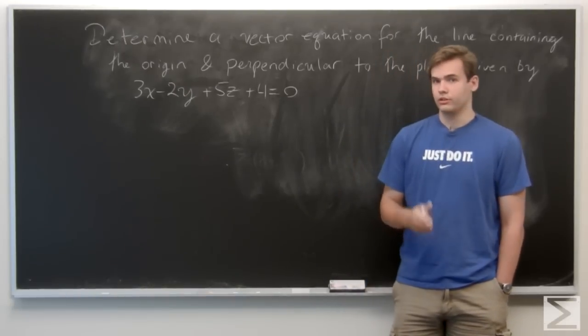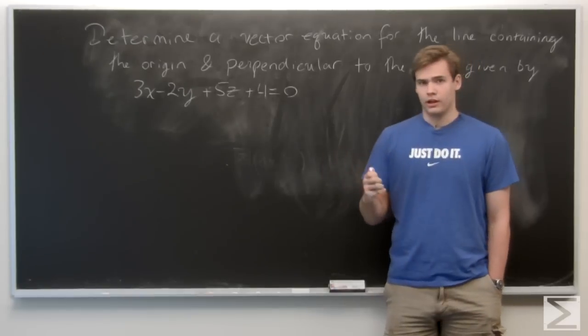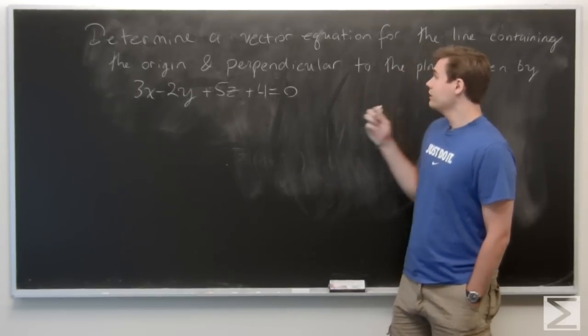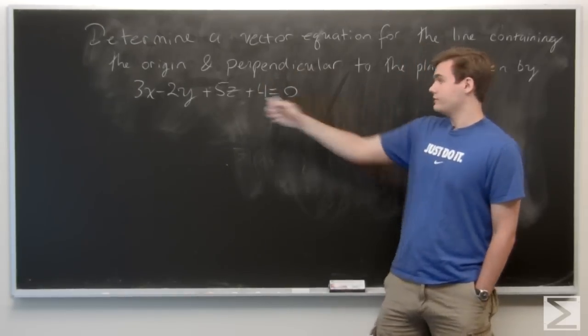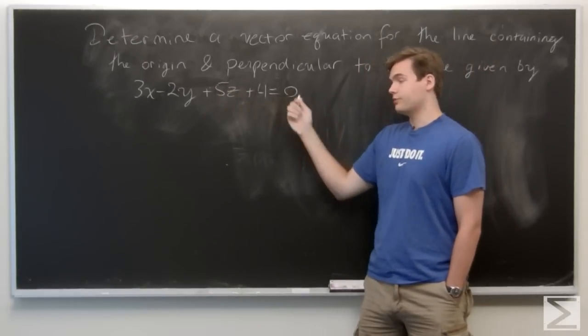So in this problem, we want to determine the vector equation for a line. All we know about the line is that it contains the origin and is perpendicular to the plane given by this equation: 3x minus 2y plus 5z plus 4 equals 0.